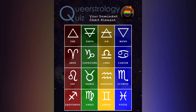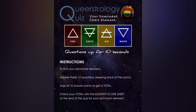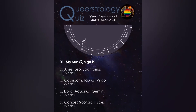You're going to need to look at your natal chart, so if you don't have one make sure you click the link in my bio for your free natal chart. When you've finished answering all 10 questions, add up the totals and check out that number with the element score sheet to find out which element is dominant in your natal chart and what that indicates.